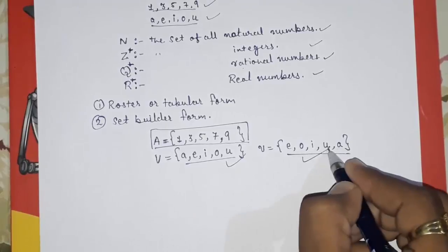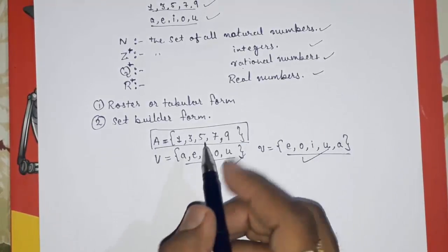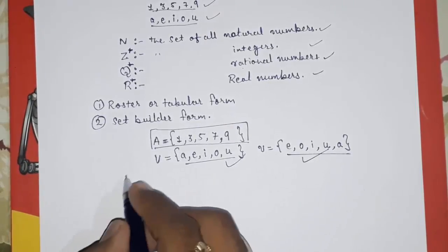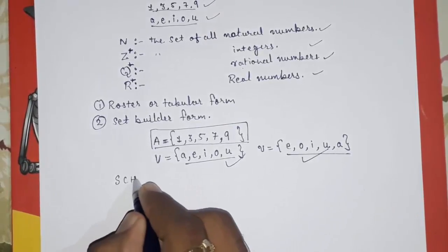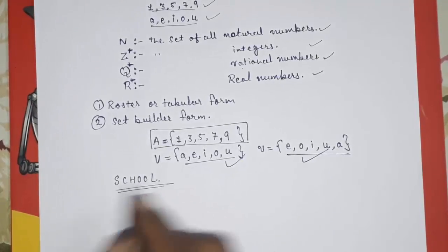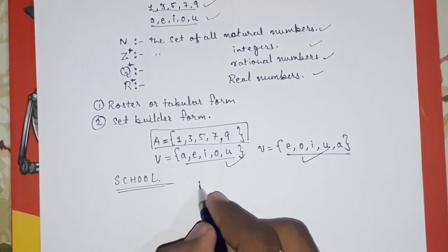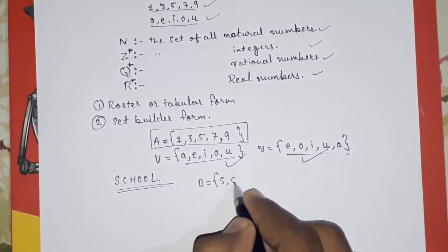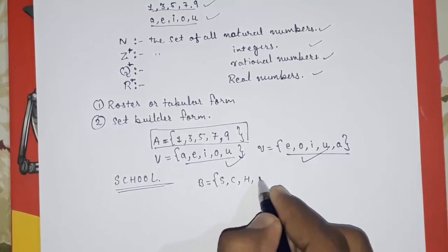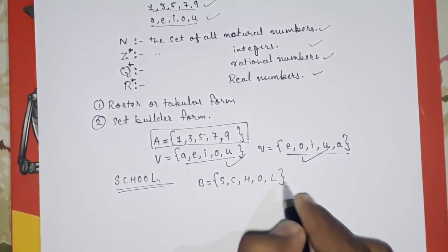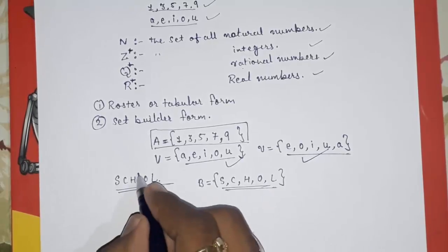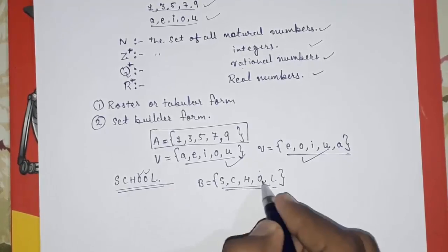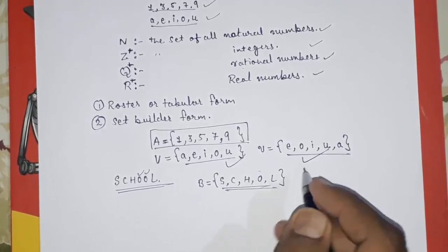Second point: one element cannot be repeated in a set. For example, if they tell you to write the letters of the word 'school', the set B = {S, C, H, O, L}. Even though 'O' appears twice in the word, it is written only once in the set. These two things you have to keep in mind for Roster form.